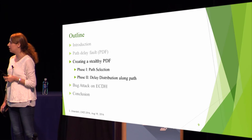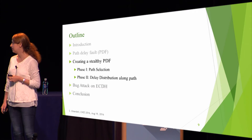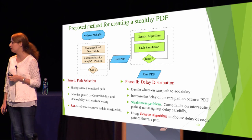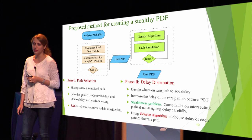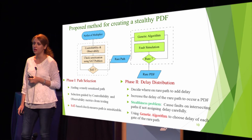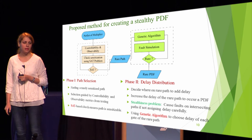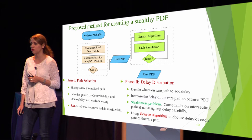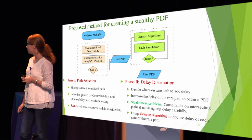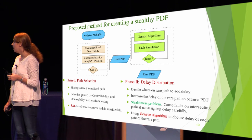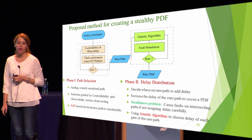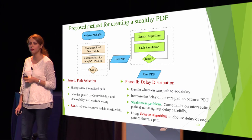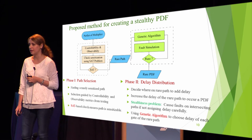Now I'm going to talk about our method for creating a stealthy path delay fault. This is the flowchart of our proposed method, which consists of two main phases. The first phase is path selection and the second is delay distribution. In path selection, we search the circuit and find a rarely sensitized path, using controllability and observability metrics to guide our path selection algorithm, and a SAT-based check to ensure triggerability. In the second phase, delay distribution, we decide where on the rare path to add the delay. We use a genetic algorithm to smartly distribute the delay over the gates of the selected rare path.